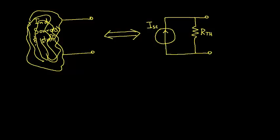You'll notice that we use the same terminology for the current source and the equivalent resistance as we did in the Thevenin equivalent circuits. In fact, we even call the equivalent resistance R-Thevenin, because it's the same as the Thevenin equivalent resistance.